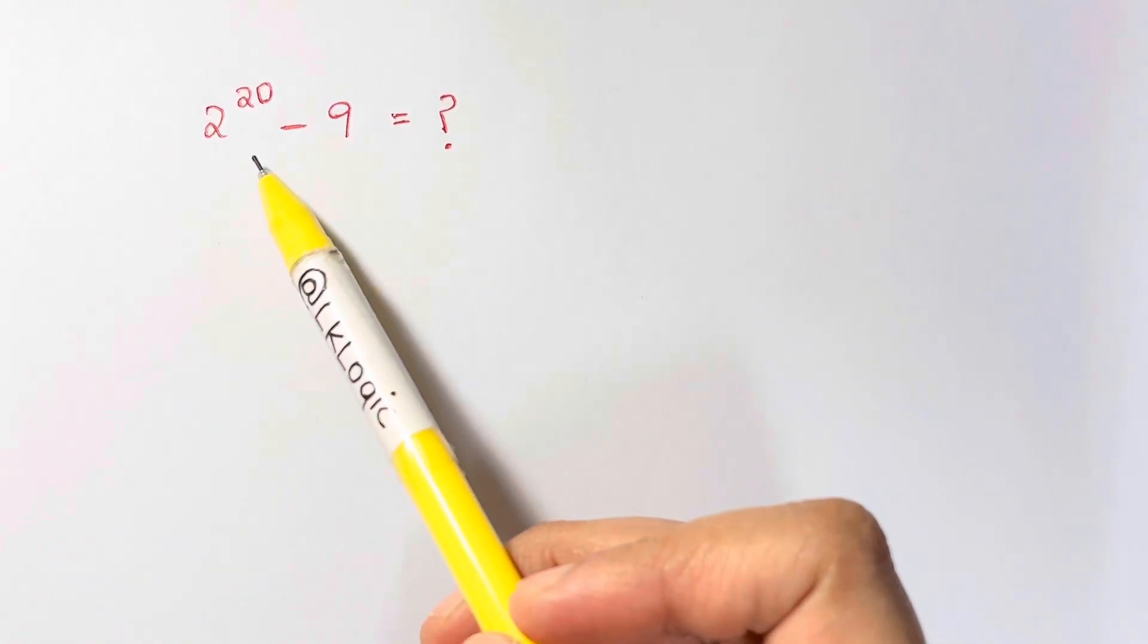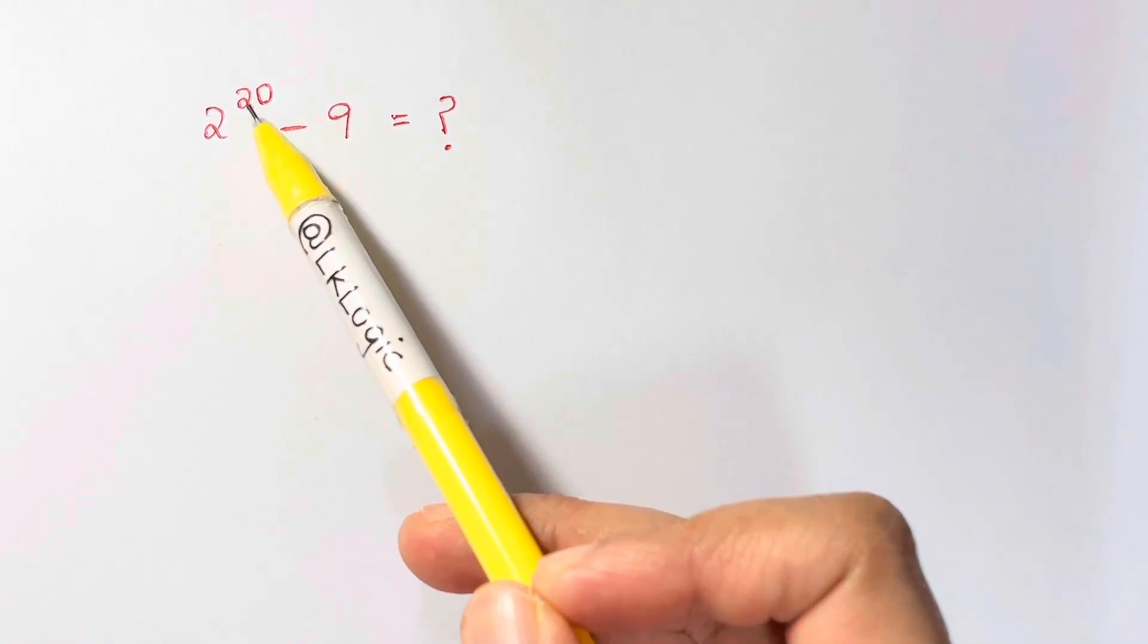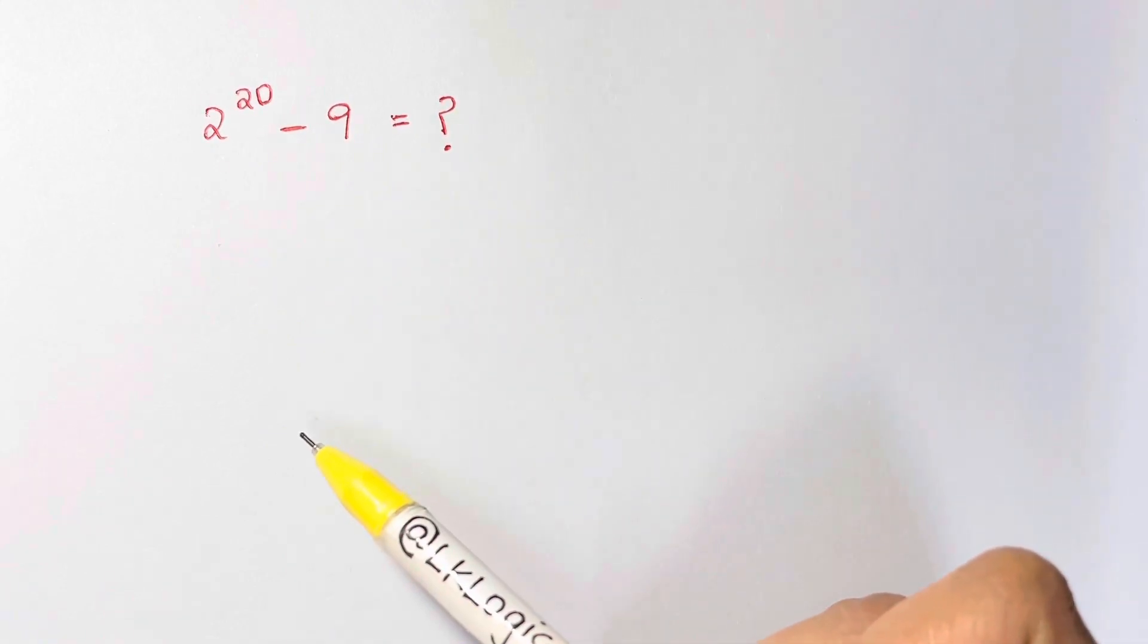Hi guys, we have here a question which is 2 to the power of 20 minus 9 equals what. So how can we solve this?